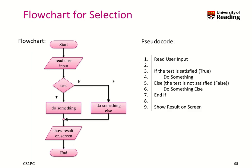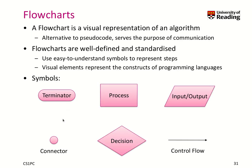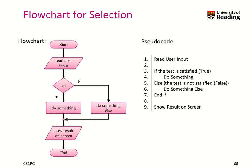For selection: if the test is satisfied we do something; else — the test is not satisfied — we do something else. In the flowchart we use the decision-making diamond construct. We perform a test: if true, we do something; if false, we do something else. You follow the correct arrow depending on the outcome and perform the action. A connector symbol shows where the two paths join together before showing the result on screen.